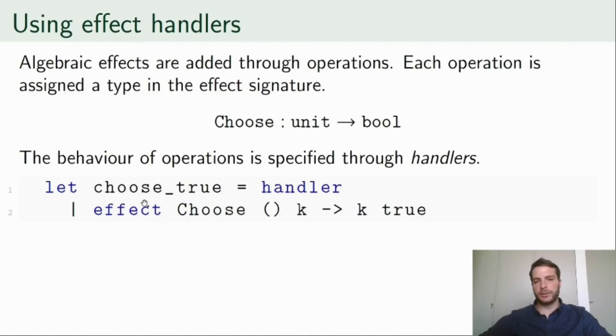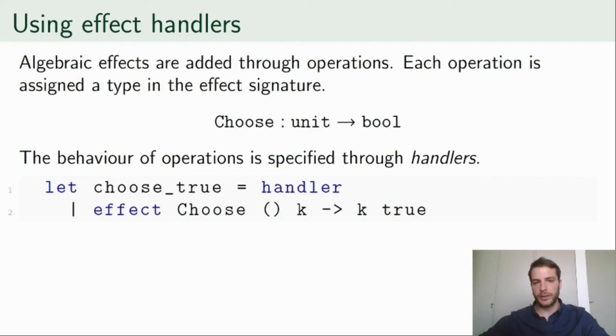The choose_true handler has an effect case for choose, and here we have the unit argument of the operation call and the program continuation k, which is captured at the time of the operation call. The effect case states that whenever choose is invoked, the continuation is resumed with the value true. This causes every call of choose to simply return the value true.